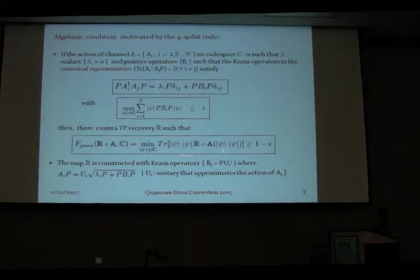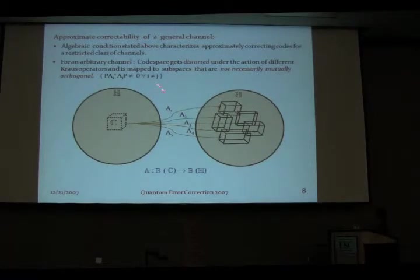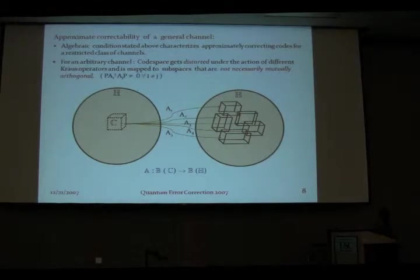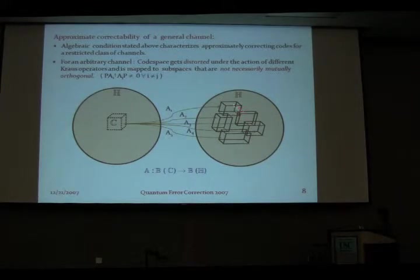This condition is still restricted because we are demanding that the code space is mapped to only orthogonal subspaces. We asked whether it is possible to write down a condition for the action of an arbitrary channel. Going back to this picture: we map the code space to a set of subspaces which are not necessarily mutually orthogonal. In fact, there exists no Krauss representation of the channel where PAI†AJP is going to be zero. Not only is the code space being distorted in a non-unitary fashion, but there is also a finite non-zero overlap between the different subspaces that the Krauss operators are mapping the code space to.